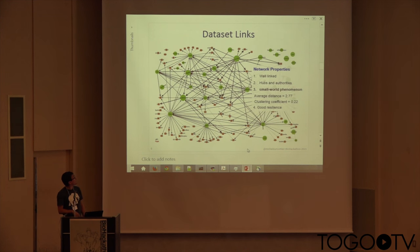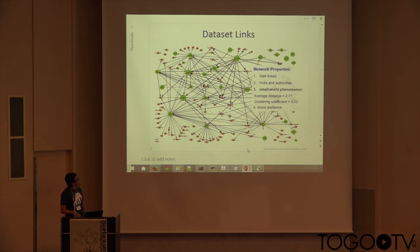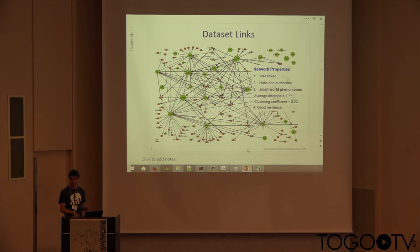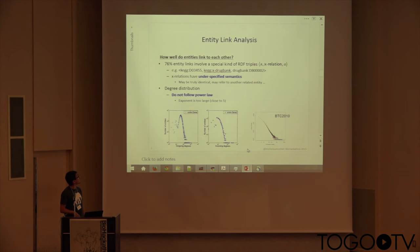This network diagram shows the connectivity between some of the data sets in the network, and indeed the network is well-linked, with components of hubs — data sets that link many other data sets and are also authoritative. For instance, PubMed typically doesn't link out to anything else, but everybody links to PubMed. It has a small world characteristic with an average distance of 2.7 and clustering coefficient of 0.22, showing it's fairly resilient — you can take out nodes and still recapitulate most of the structure.